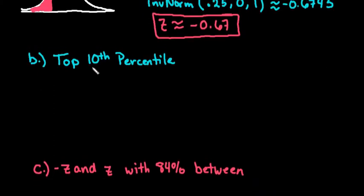The second scenario we have is the top 10th percentile. When it asks for the top 10th, that's talking about it's shaded to the right. So we're looking for 10% of our area shaded to the right.